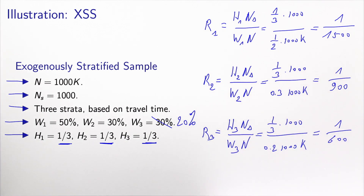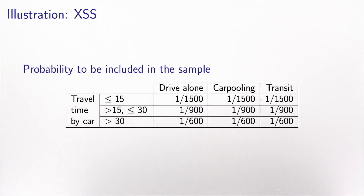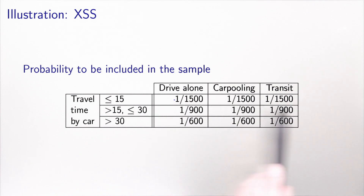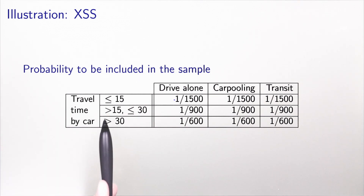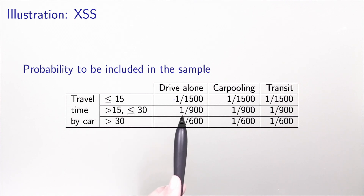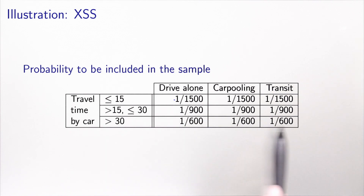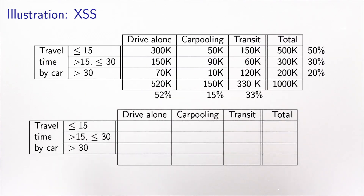If we put these probabilities in the table: for people with short travel time, the probability to be selected is 1/1500, and it's the same irrespectively of the choice they make — remember, this is exogenous. For people with medium travel time, the probability is 1/900, and for long travel time it is 1/600. Again, these quantities are constant irrespectively of the choice people make. We can now apply the sampling strategy and collect data, using the proportions we have seen.